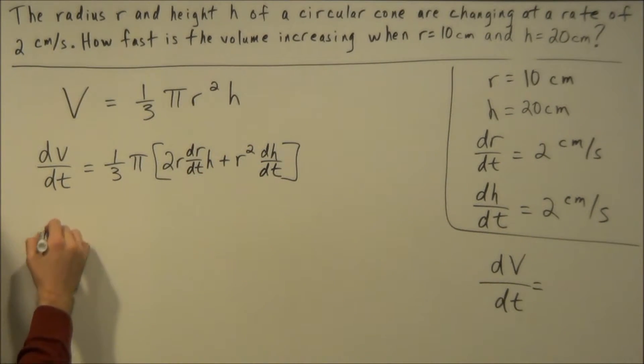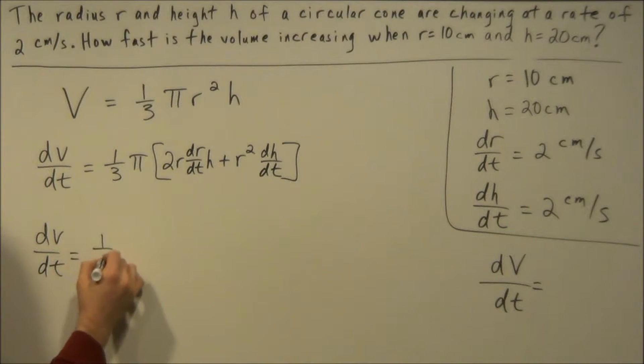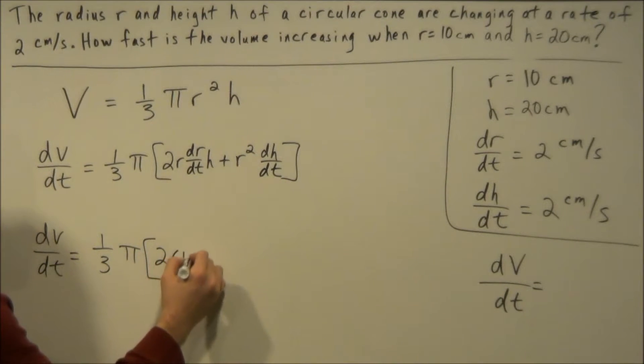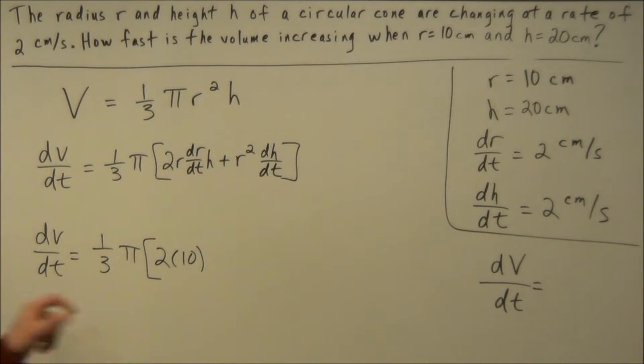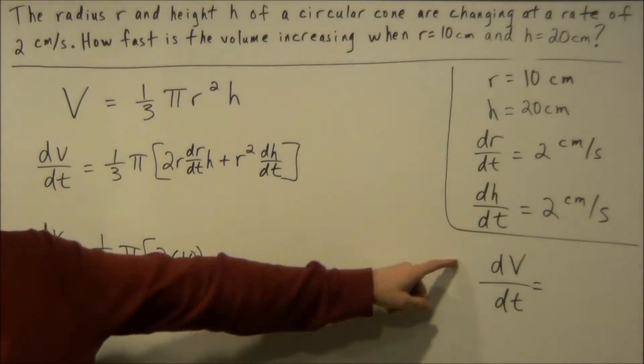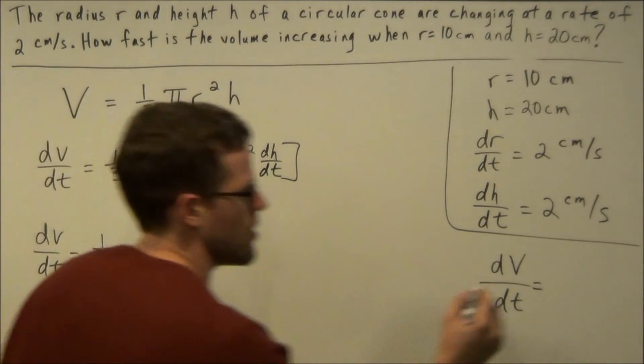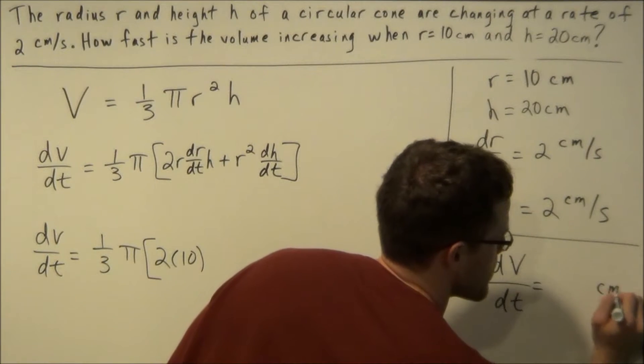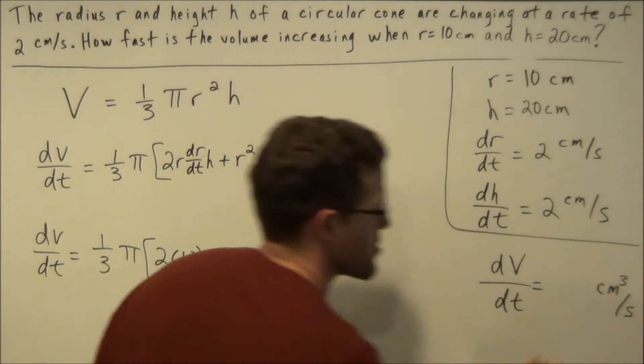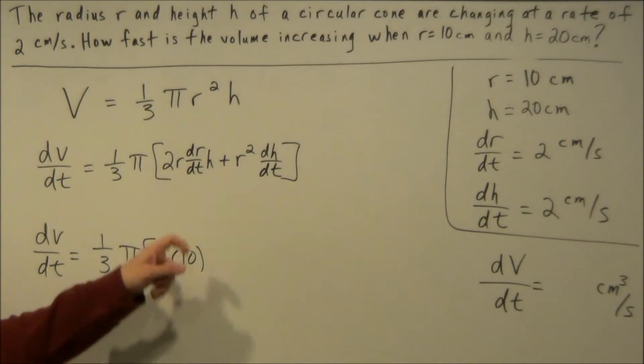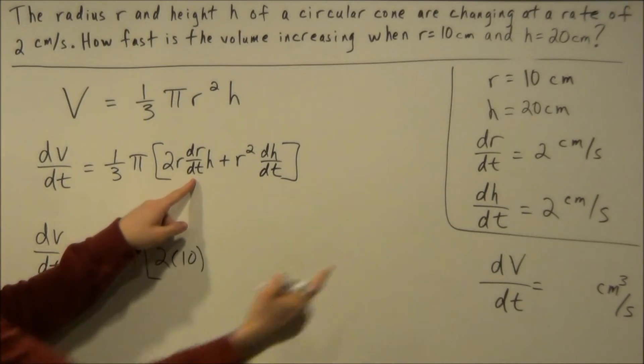So for the next line we're going to have dV/dt equals one-third pi and we have 2 times r, r is equal to 10. And I'm going to leave the units out at this step but just know if we're talking about the rate of change of volume the final unit is going to be centimeters cubed per second. So we have 2 times 10, dr/dt is equal to 2.